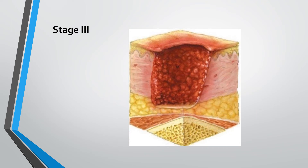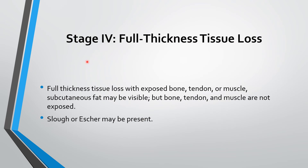In stage four there is full thickness tissue loss — loss of subcutaneous fat — and in many cases bone, tendon, and muscles are exposed to the environment. The fat may be visible, but approximately in stage four cases the bone and tendon and muscles are exposed to the outside. If only subcutaneous fat is visible and bone and tendon are not exposed, slough or eschar may be present.